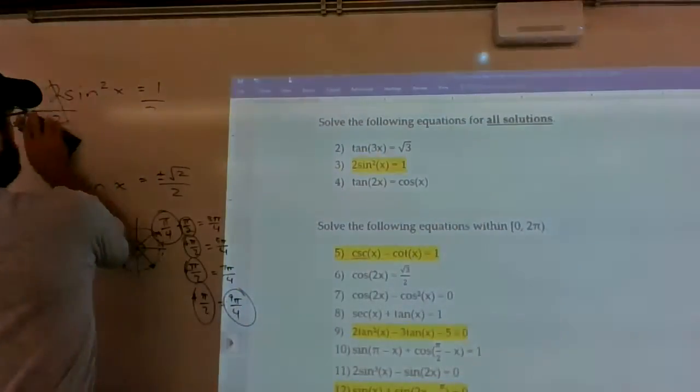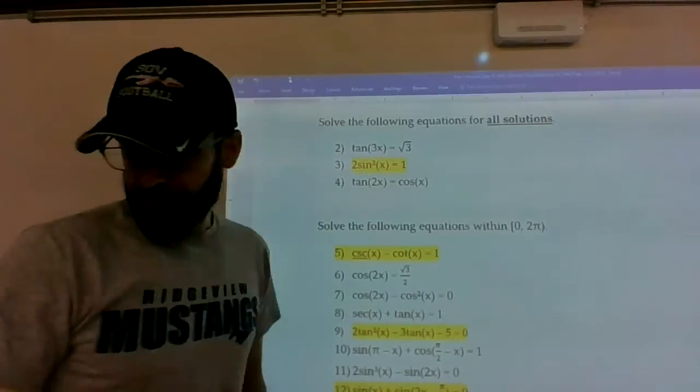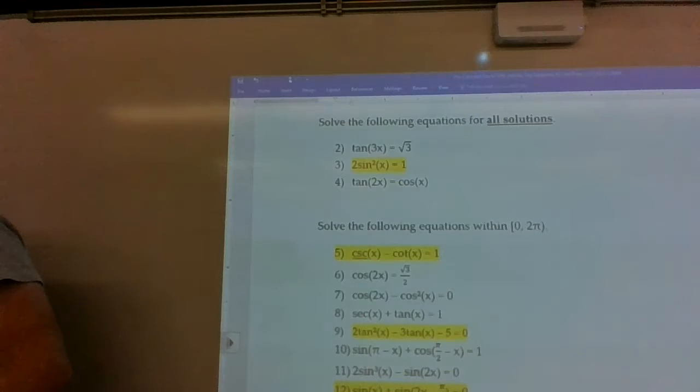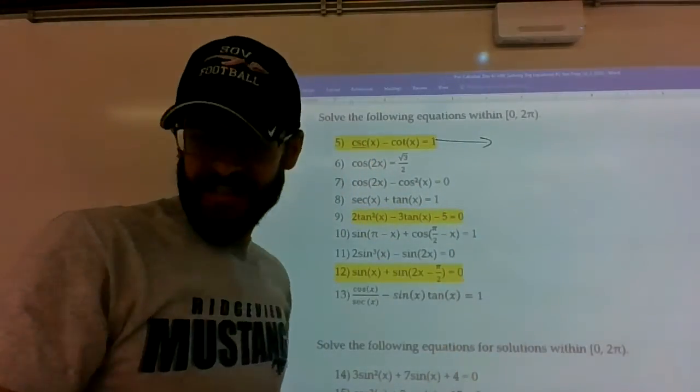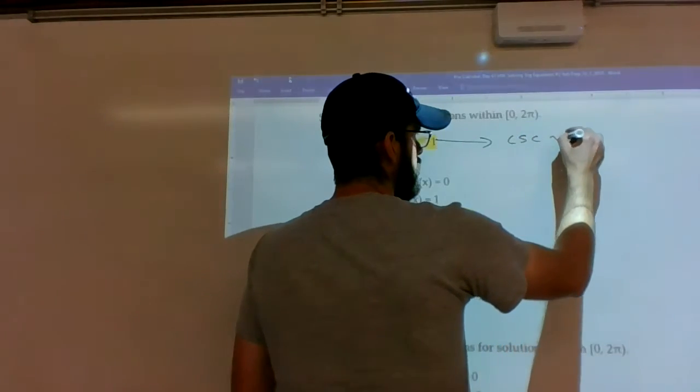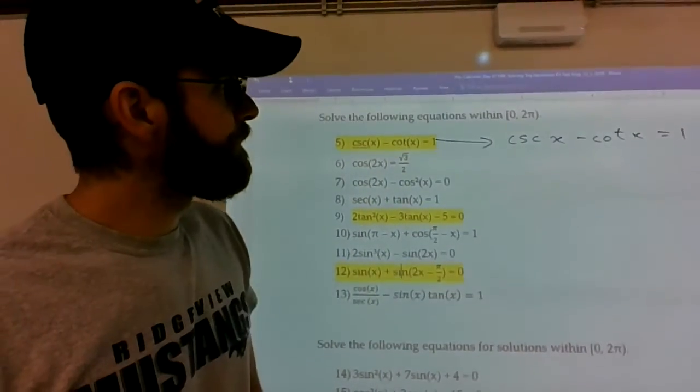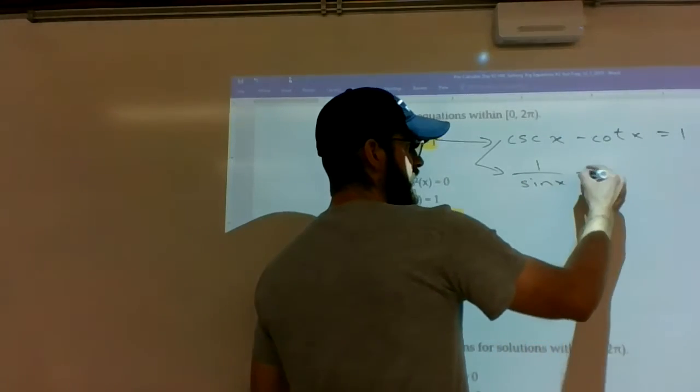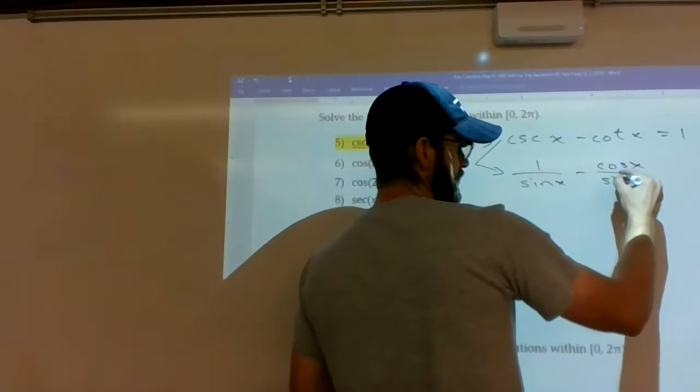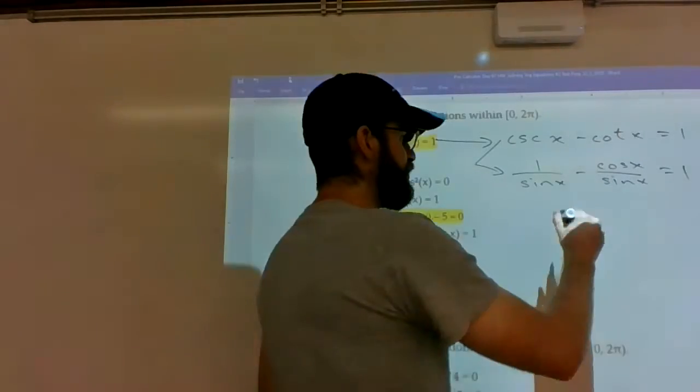Let's do number five now. So one of our go-to strategies was turning everything into sines and cosines. But we really didn't do it on many examples from the textbook. So I thought this example would be a perfect candidate to show you guys. If you turn these into sine and cosines, things jump out at you right away.